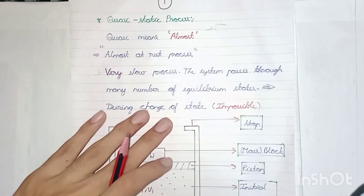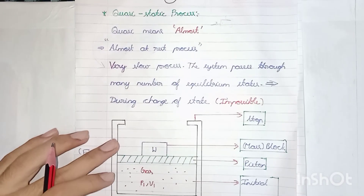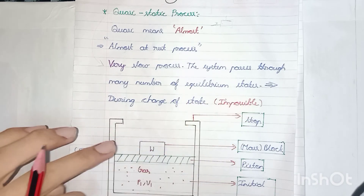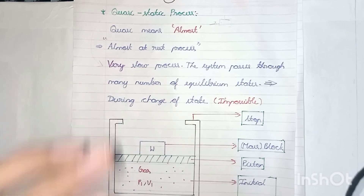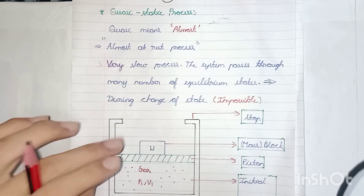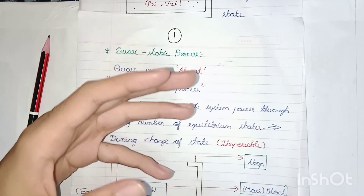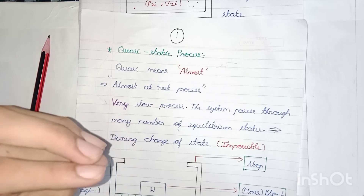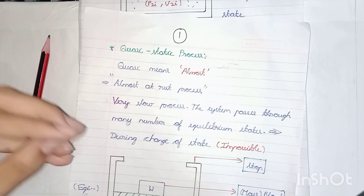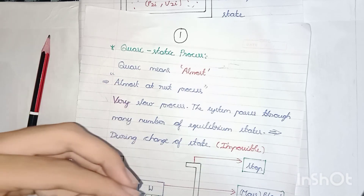Let's recap: quasi-static process. From the meaning of the topic, it is an 'almost at rest process.' From that we derive the definition: it is a very slow process in which the system passes through many number of equilibrium states during change of state. This process is impossible, and it is reversible. Hope everyone liked this video — please share it with your friends, and like, share, and subscribe.